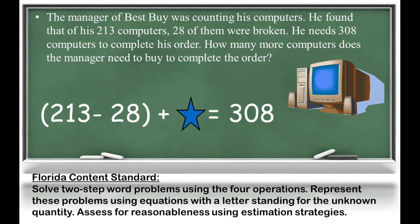They will also be expected to write equations that represent the actions in a problem. For example, 213 minus 28 plus some number equals 308. Students will also be expected to use symbols or letters, which are variables, to replace the missing pieces of information in a problem.